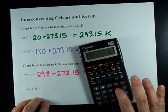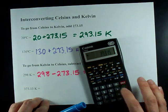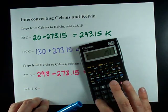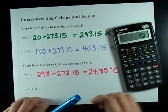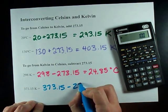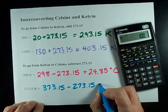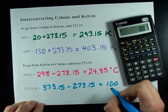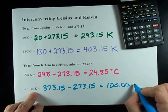Finally, 373.15 minus 273.15 gives me 100. 373.15 minus 273.15 is exactly 100 if I'm going to use my significant figure rule.